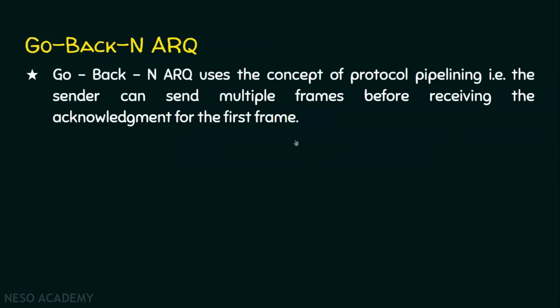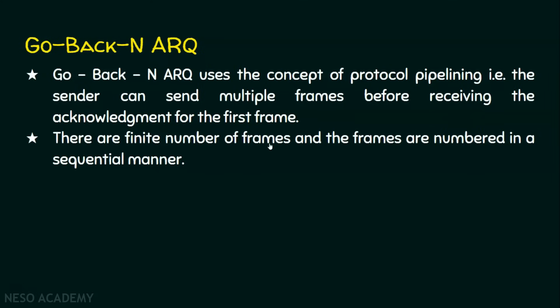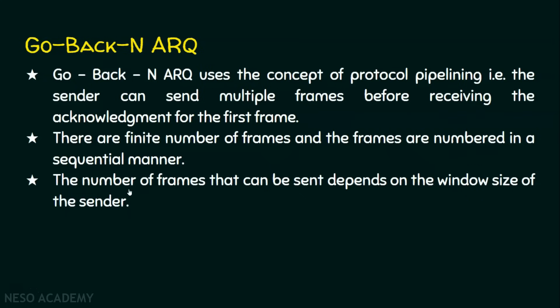In Go-Back-N ARQ, it uses the concept of protocol pipelining — the sender can send multiple frames before receiving an acknowledgement for the first frame. Suppose if we have 5 frames and the concept is Go-Back-3, then frames 1, 2, and 3 can be sent before expecting the acknowledgement for frame 1. There are a finite number of frames numbered sequentially. These numbers are called sequence numbers. The number of frames that can be sent depends on the sender window size N.